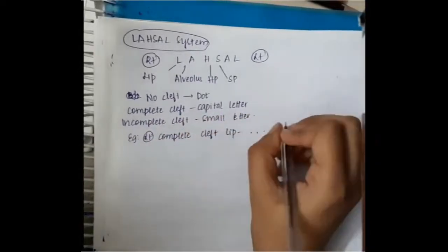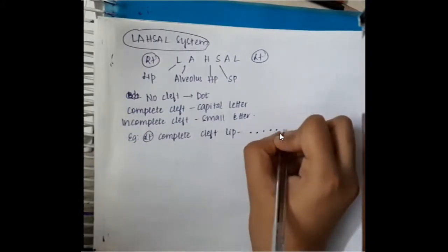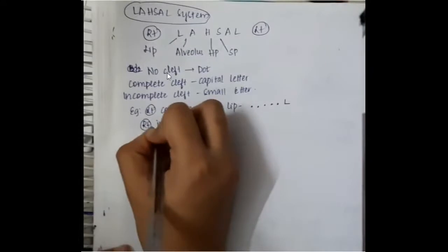If there is left complete cleft lip, in that left complete cleft lip, right lip is normal, so one dot. Alveolus is normal, second dot. Hard palate is normal, next again dot. Soft palate is normal, again dot. Alveolus is normal, dot again. At the last L, it is complete, so capital letter L should be put. This is how you will represent the left complete cleft lip with Lashal system.